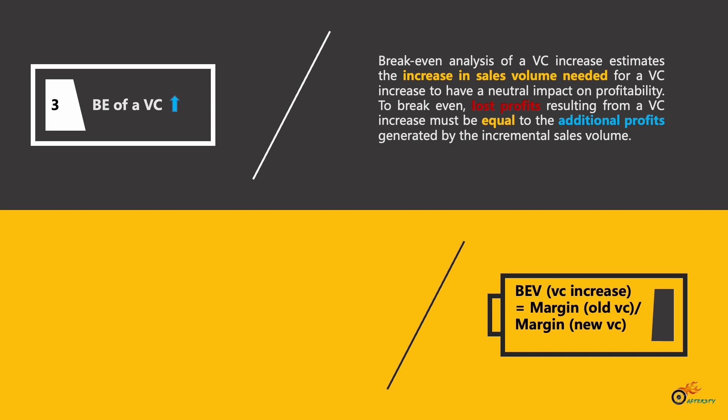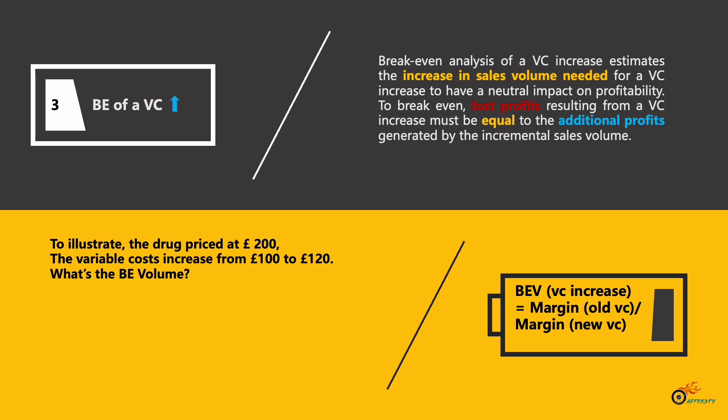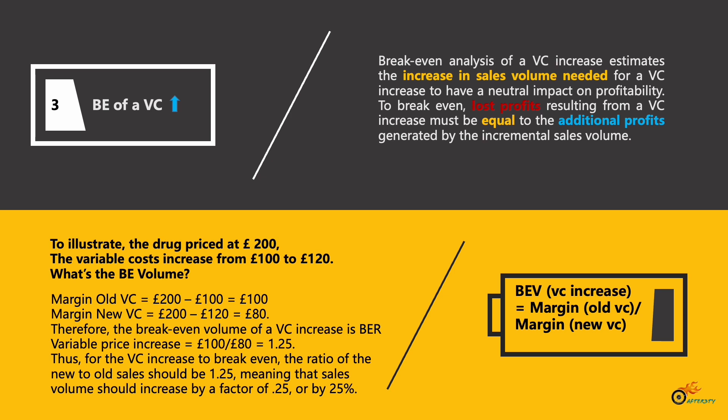If the drug is priced at 200 pounds and variable costs increase from 100 pounds to 120 pounds, we calculate the margin at the old variable cost as 200 minus 100, which is 100 pounds. The margin at the new variable cost is 200 minus 120, which is 80 pounds. The break-even volume is 100 divided by 80, which equals 1.25. This means sales volume should increase by a factor of 25% for the variable cost increase to break even.